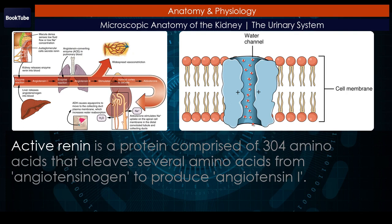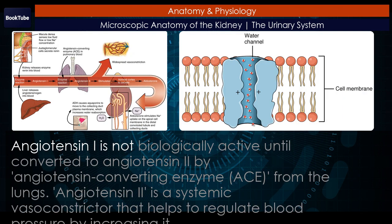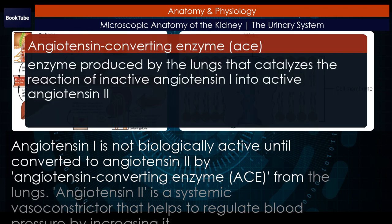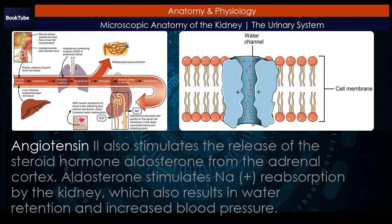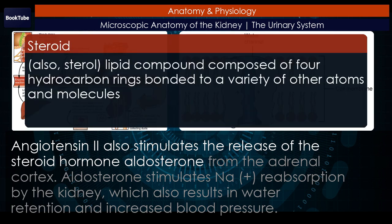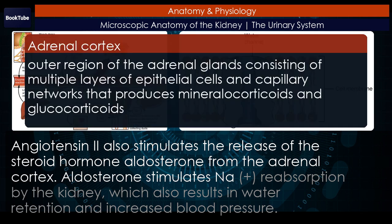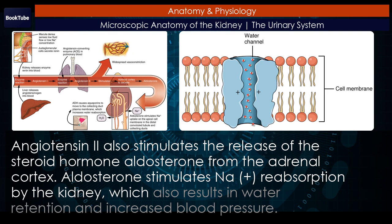A second function of the macula densa cells is to regulate renin release from the juxtaglomerular cells of the afferent arteriole. (Figure 4.) Active renin is a protein comprised of 304 amino acids that cleaves several amino acids from angiotensinogen to produce angiotensin I. Angiotensin I is not biologically active until converted to angiotensin II by angiotensin converting enzyme (ACE) from the lungs. Angiotensin II is a systemic vasoconstrictor that helps to regulate blood pressure by increasing it. Angiotensin II also stimulates the release of the steroid hormone aldosterone from the adrenal cortex, which stimulates Na⁺ reabsorption by the kidney, resulting in water retention and increased blood pressure.